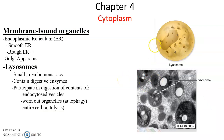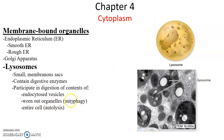Lysosomes are small membrane sacs — modified vesicles — filled with digestive enzymes that break down all kinds of macromolecules. They can be involved in digestion of contents from phagocytosis. They can be sent to worn-out, non-functioning organelles to break them down — a process referred to as autophagy. Lysosomes can also be involved in destroying the entire cell, which is called autolysis.